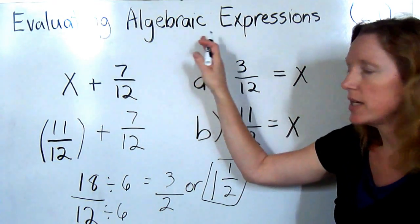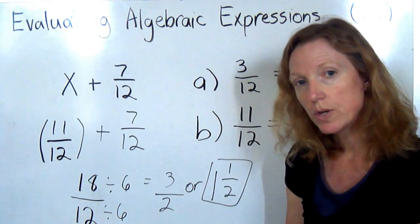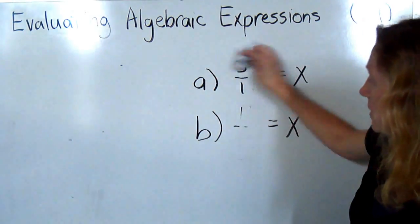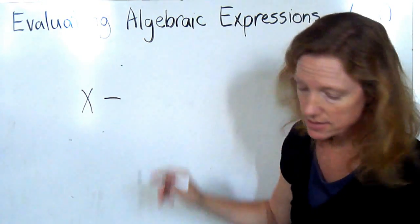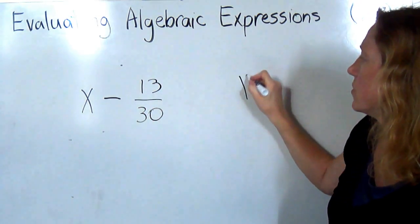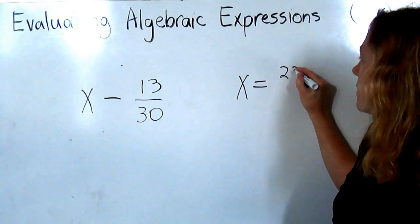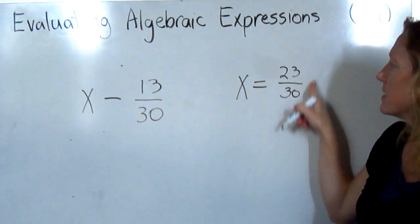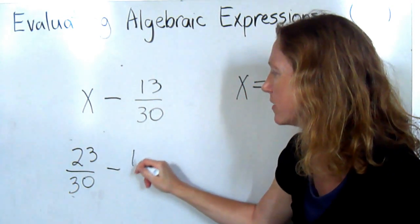And that is evaluating an algebraic expression. Now I'm going to put another example up here with a value for x, and I want you to figure out the answer. See if you do it correctly. My expression is going to be x subtract 13 over 30, and I'm going to let x equal 23 over 30. Okay, so to set up, I'm going to take this x out and replace it with 23 over 30.